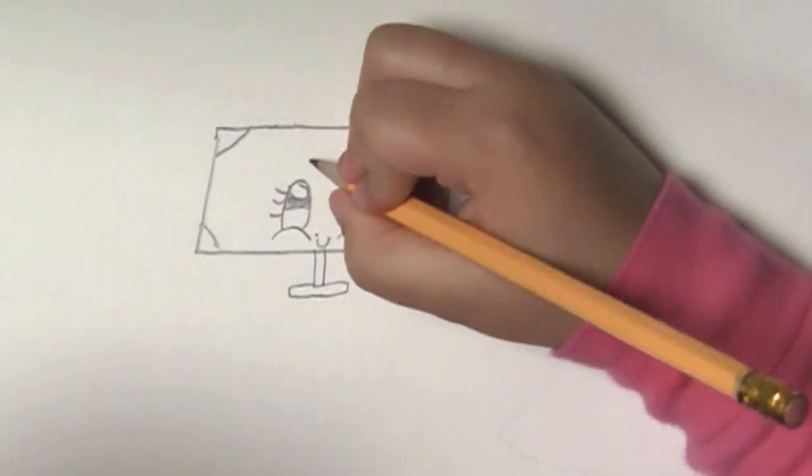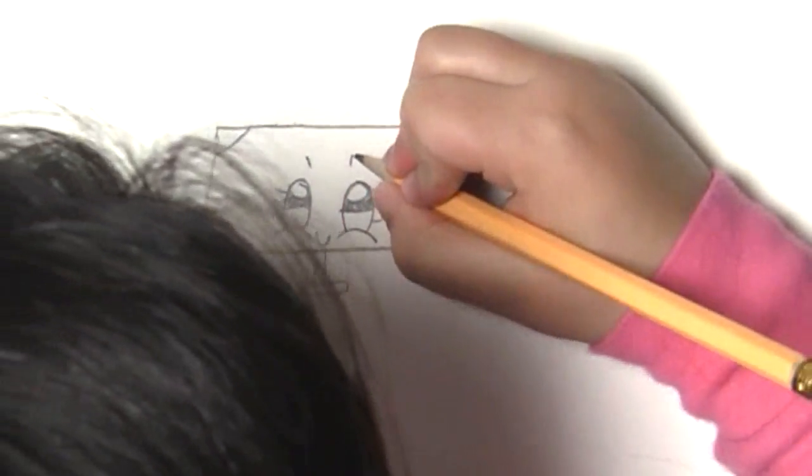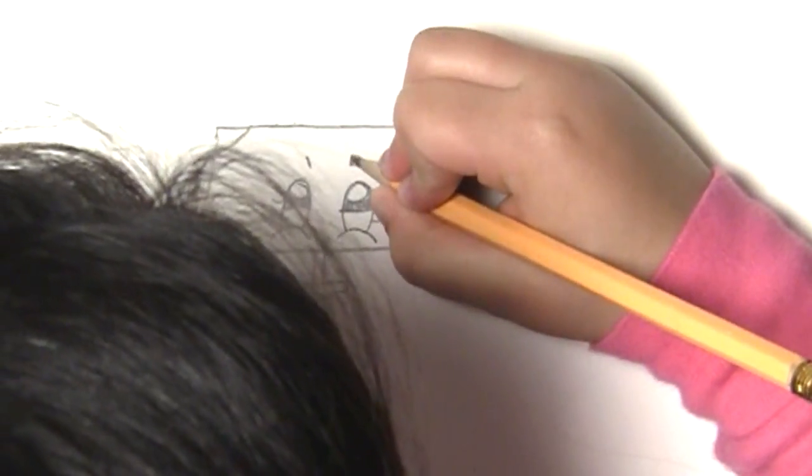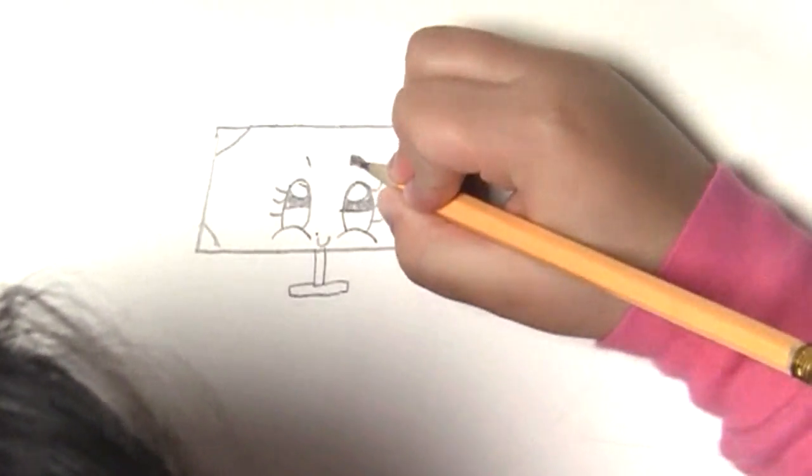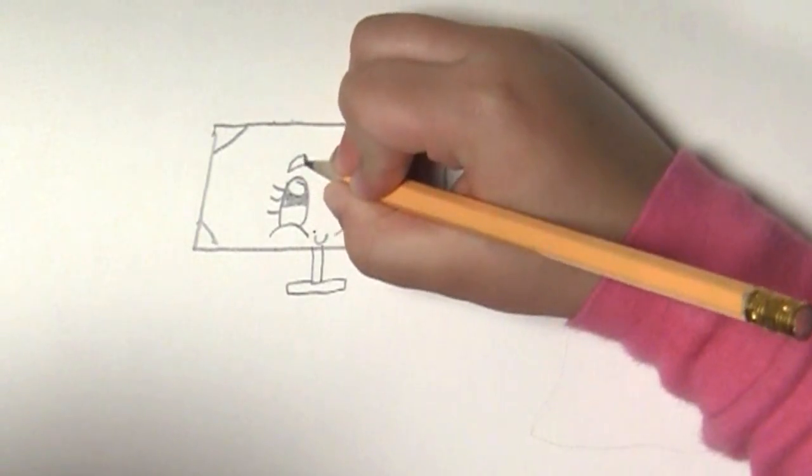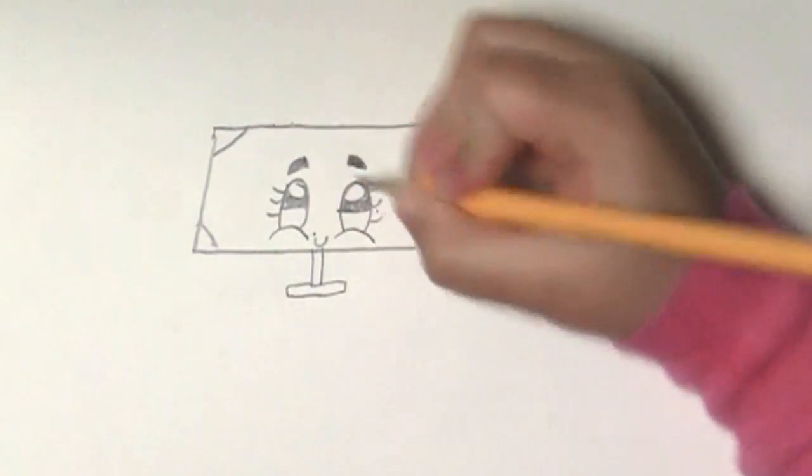And then what you're going to do is put little eyebrows. One. Like that.